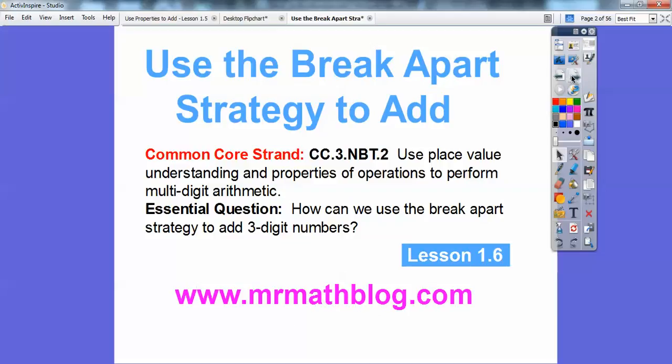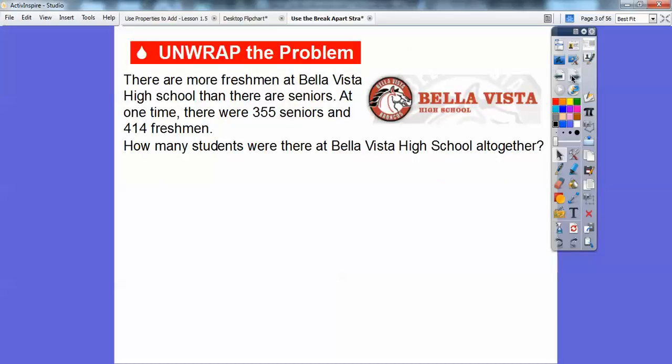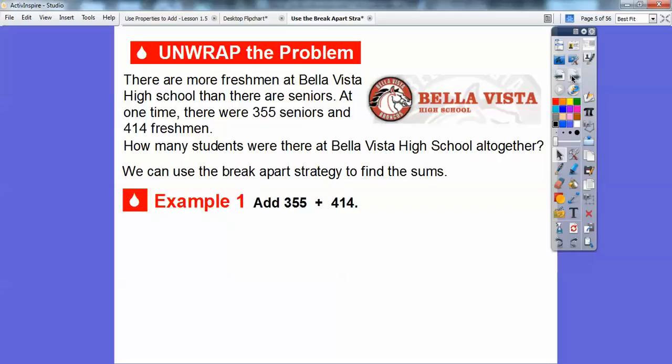Let's get started. There are more freshmen at Bella Vista High School than there are seniors. At one time, there were 355 seniors and 414 freshmen. How many students were there at Bella Vista High School altogether? We're going to use the Break-Apart Strategy to find the sum. So we're asked to add 355 plus 414.